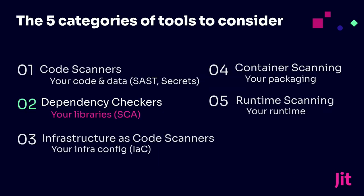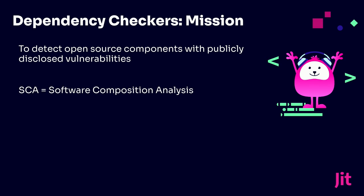Up next is dependency checking — second on the list for good reason, with all the software supply chain issues, breaches, and attack vectors out there. Bad actors are certainly looking for that now — it's front and center. Ransomware has come down a little bit, but software supply chain is front and center with a lot of the breaches. What is this? It's detecting open source components with publicly disclosed vulnerabilities — software composition analysis, or SCA — to find those vulnerable libraries and software packages in our environments.